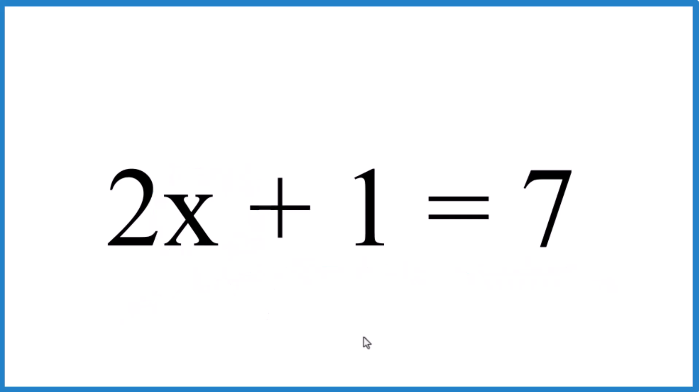So there's a few ways to do it. One way is to kind of just guess what x might be. What number would work here? So 2 times something plus 1 equals 7.